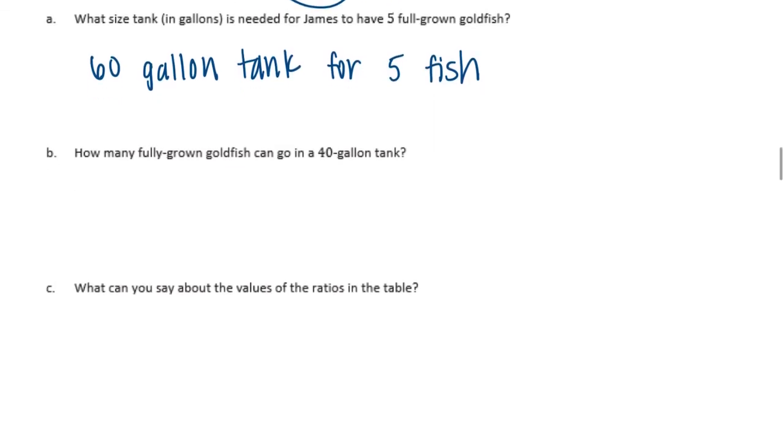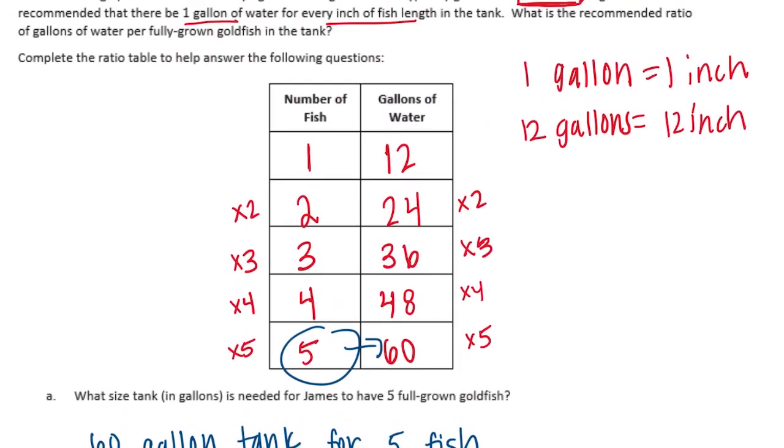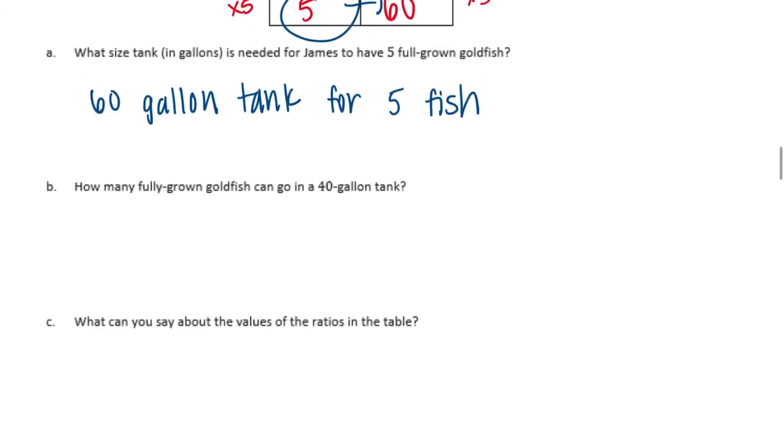B, how many fully grown goldfish can go in a 40 gallon tank? So I don't see anything here that is 40 gallons. But 40 gallons would be right in between those. So how many could go in 40 gallons? Well 4 fish need 48 gallons. So we couldn't put 4 fish in a 40 gallon tank. They wouldn't have enough space. So the most that could go into a 40 gallon tank would be 3 fish. So let's say 3 goldfish would fit in a 40 gallon tank.